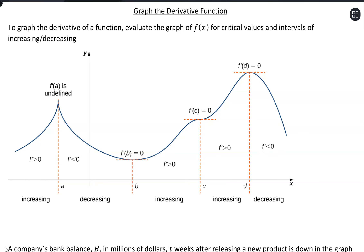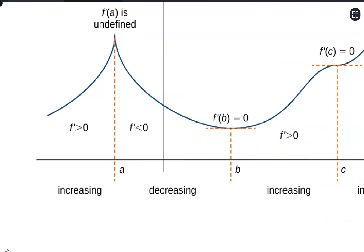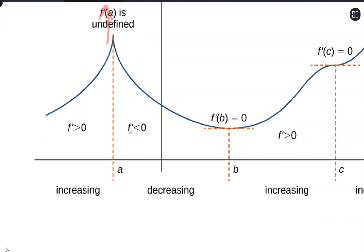So if we start to want to draw the derivative function, the critical values will give us spots where we're crossing the x-axis, except for where our function is undefined — that could show up as an asymptote on our derivative function. Because if you imagine these tangent lines, this is very positive and then it ends up almost being vertical, so it's very, very steep right there. That's giving me a tangent line with a slope that is close to positive infinity. And then over here, it would actually be negative. So if I was graphing the derivative function, I would maybe be seeing something going off to positive infinity, negative infinity, with this spot itself acting as an asymptote.